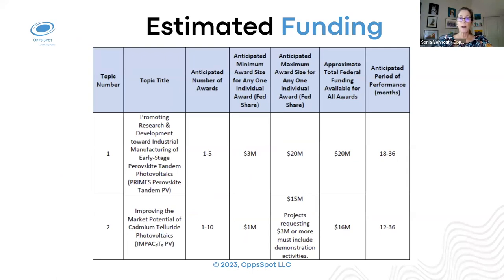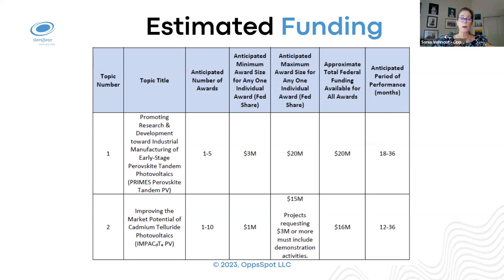This table summarizes the estimated funding for each topic and the number of anticipated awards. Topic one is up to $20 million, with anticipated awards of $1 to $5 million, a typical award of $3 million, and duration of 18 to 36 months. For topic two, the cadmium telluride topic, there will be one to ten awards up to $16 million, with a duration of one to three years.